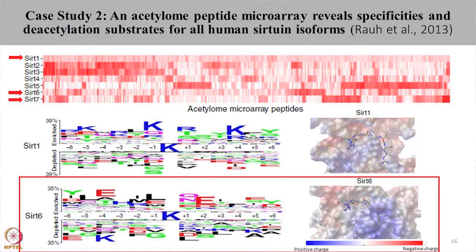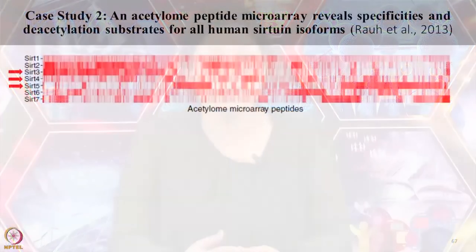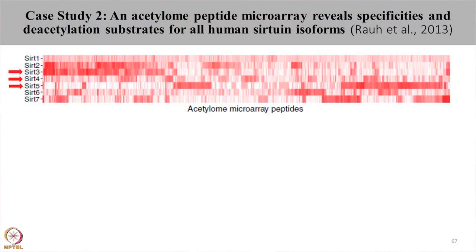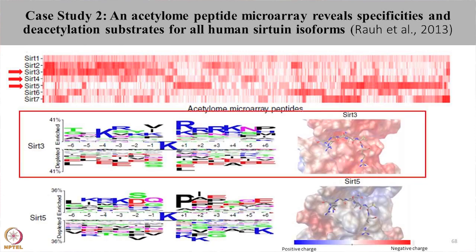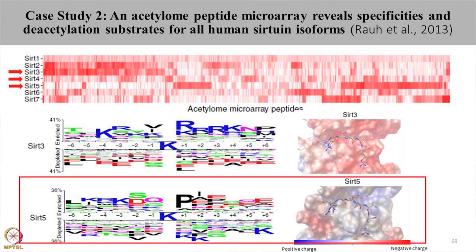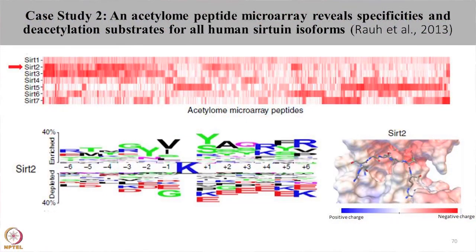For sirtuin 6, at positions plus 2 and minus 4 there is a negatively charged residue. Sirtuins 3, 4, and 5 localize to the mitochondria and show distinct peptide preferences. The peptide binding groove for sirtuin 3 is highly negative, so the peptides preferred by sirtuin 3 have many positively charged residues — specifically arginine — upstream of the acetylated lysine. For sirtuin 5, proline is predominantly present at position 1, other upstream amino acids are either positively charged or nonpolar, and downstream amino acids are majorly positively charged. Sirtuin 2, found in the cytosolic region, has a highly negative peptide binding groove and disfavours negatively charged amino acids in its sequence preference.